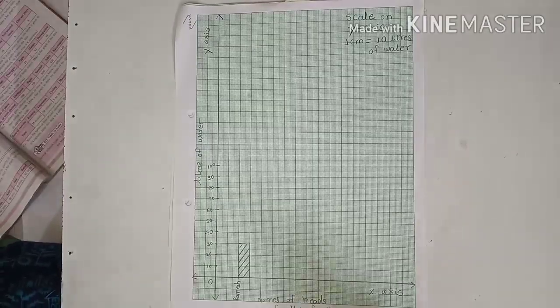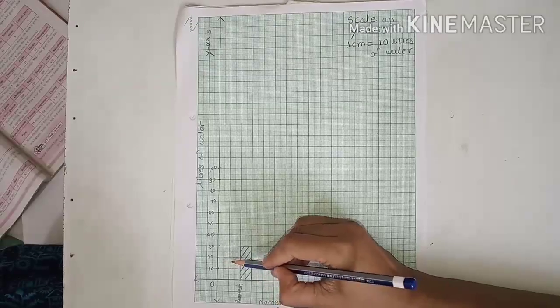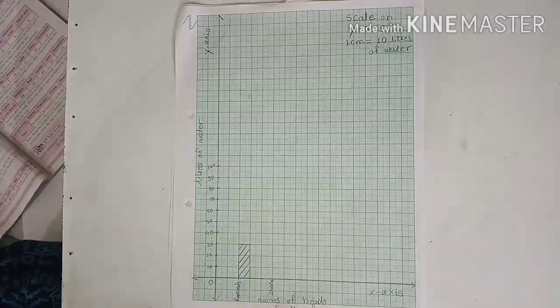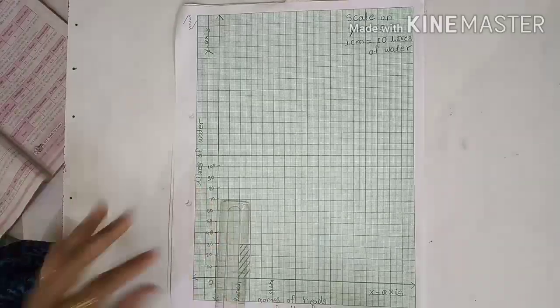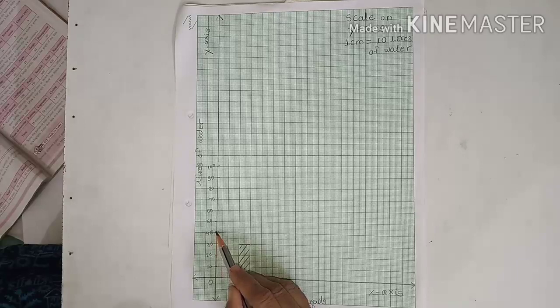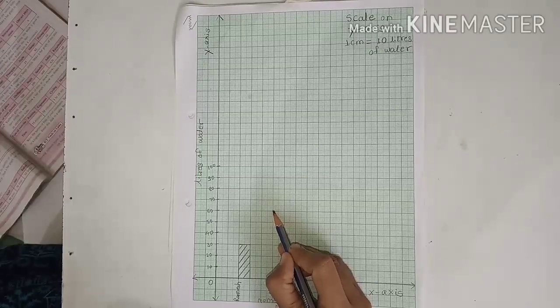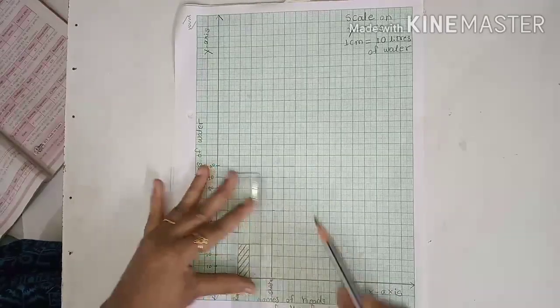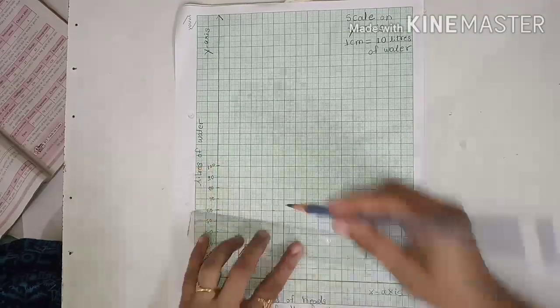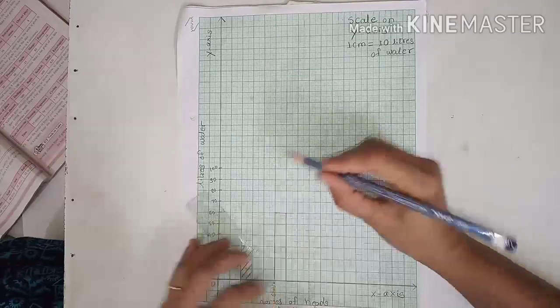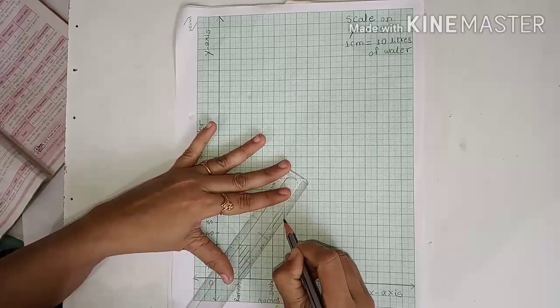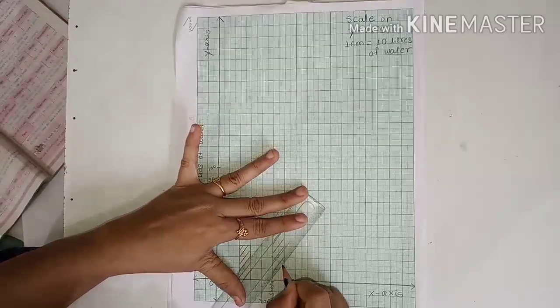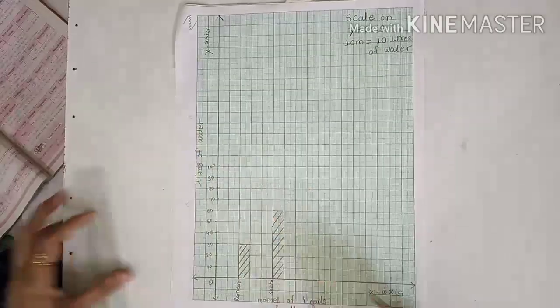Second one. Second head of the family, Shobha. The family uses 60 liters of water. Then 60: 10, 20, 30, 40, 50, and 60. 60 is here. So again 60 liters of water.